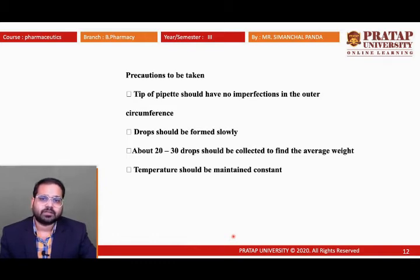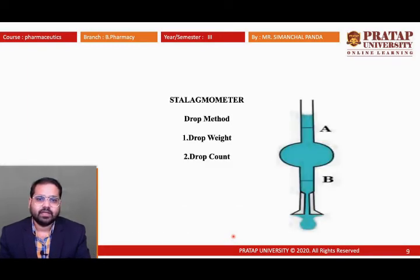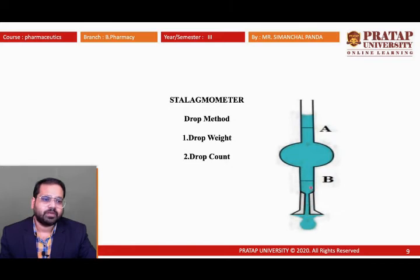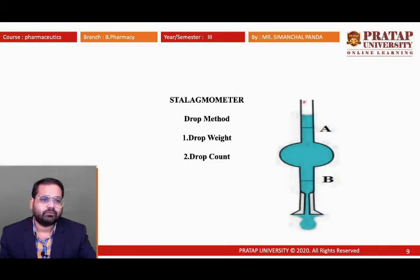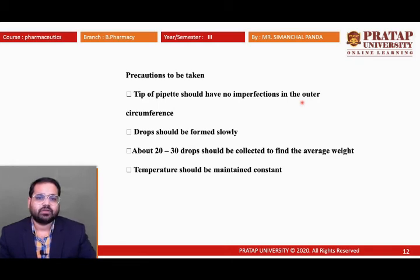Precautions for the stalagmometer method: the tip of the pipette should have no imperfection in the outer circumference, as any variation in aperture will change the number of drops and affect results. Drops should be formed slowly — applying hand pressure causes non-uniform flow due to pressure differences. Collect 20–30 droplets to find the average weight. Temperature should be maintained constant.